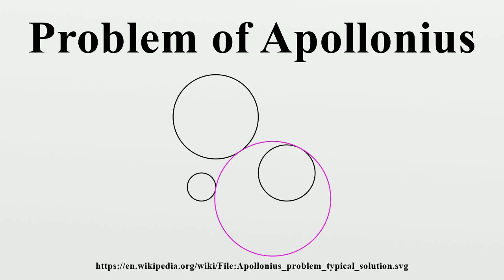Vieter first solved some simple special cases of Apollonius' problem, such as finding a circle that passes through three given points, which has only one solution if the points are distinct. He then built up to solving more complicated special cases, in some cases by shrinking or swelling the given circles. According to the 4th century report of Pappus of Alexandria, Apollonius' own book on this problem, entitled Pi Alpha Phi Alpha Iota, followed a similar progressive approach. Hence, Viet's solution is considered to be a plausible reconstruction of Apollonius' solution, although other reconstructions have been published independently by three different authors.